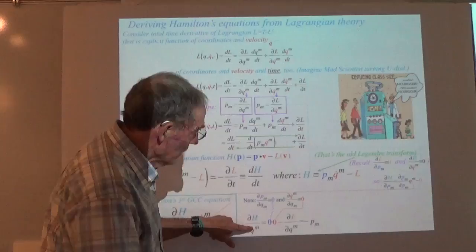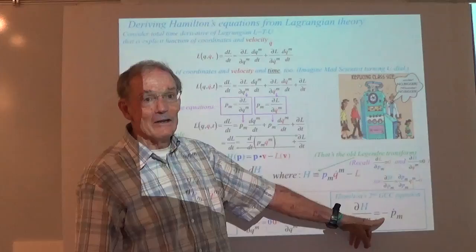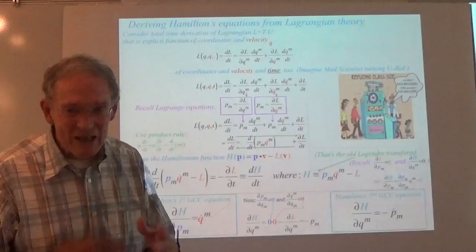Hamilton's second equation has a minus sign — not quite as elegant as the Lagrangian pair. We've got a minus sign, so we're going to have to worry about that. That's making some anti-symmetry come up in the discussion here.